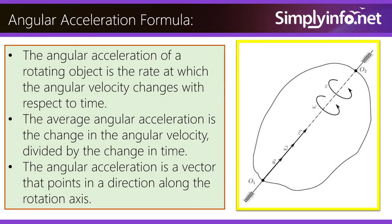Angular acceleration formula. The angular acceleration of a rotating object is a rate at which the angular velocity changes with respect to time. The average angular acceleration is the change in the angular velocity divided by the change in time. The angular acceleration is a vector that points in a direction along the rotating axis.